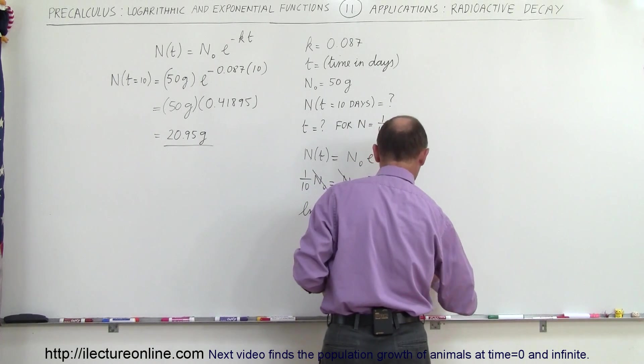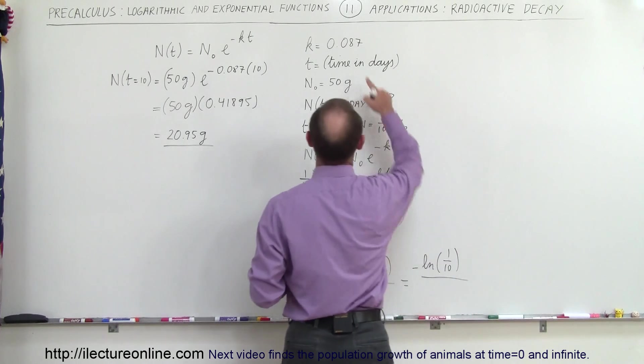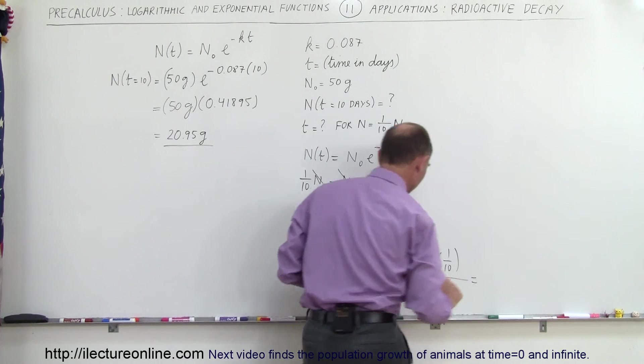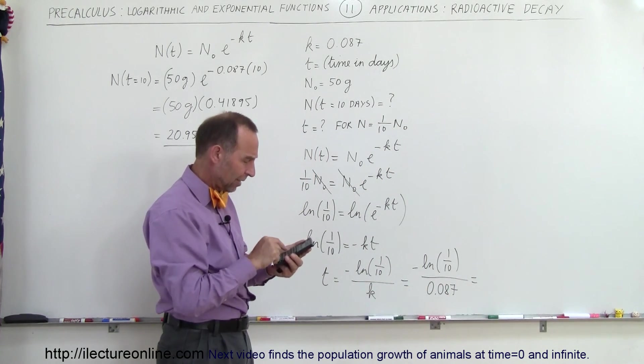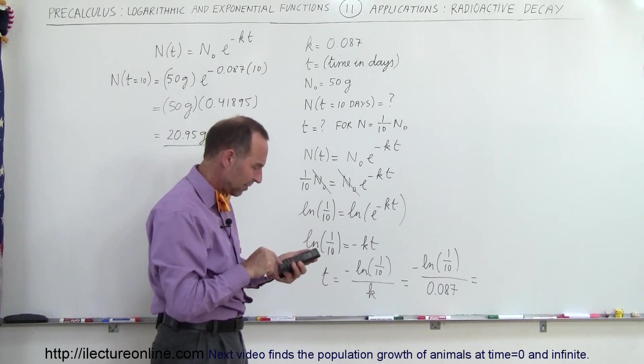So this will be equal to negative of the natural log of one tenth, and k is equal to 0.087. Alright, so what do we get? So 0.1, take the natural log of that, multiply times the negative 1, and divide by 0.087.